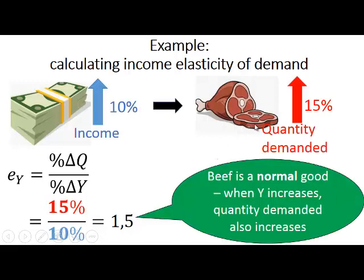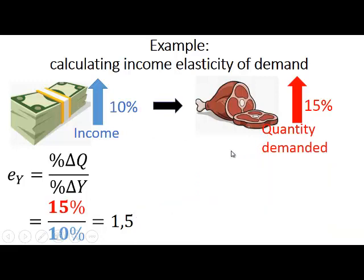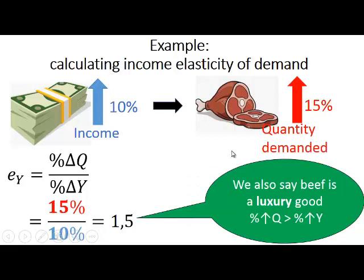This implies that beef is a normal good — when income increases, the quantity demanded of beef also increases. We can also say that beef is a luxury good, because the percentage change in the quantity demanded is larger than the percentage change in income. So people buy more of a luxury good when their income increases, and they buy a larger percentage of that good than the percentage increase in income.